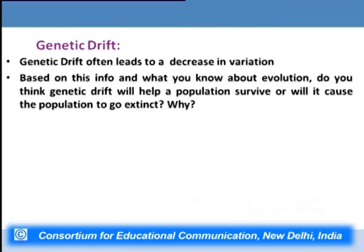Based on this, genetic drift can cause a population to go extinct because of reduced variation. A small population experiences inbreeding and very low variation for a given gene locus, which means the species cannot adapt to a changing environment.